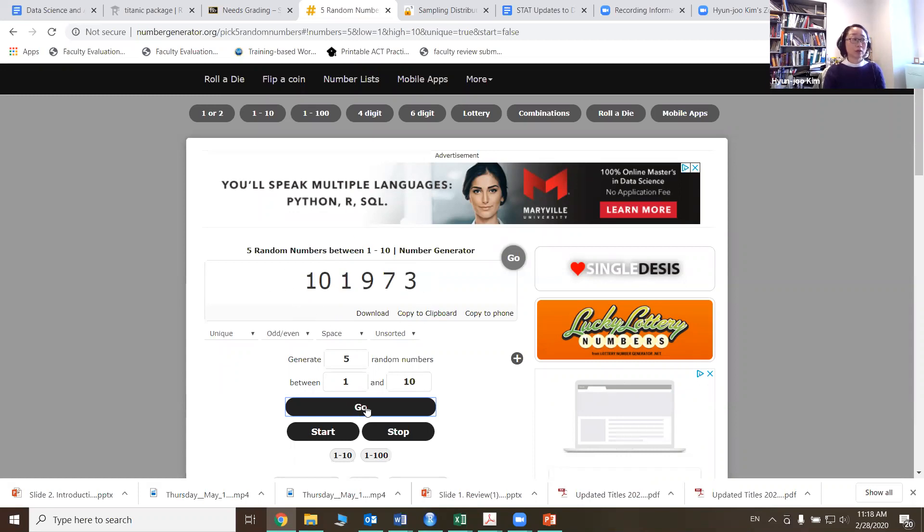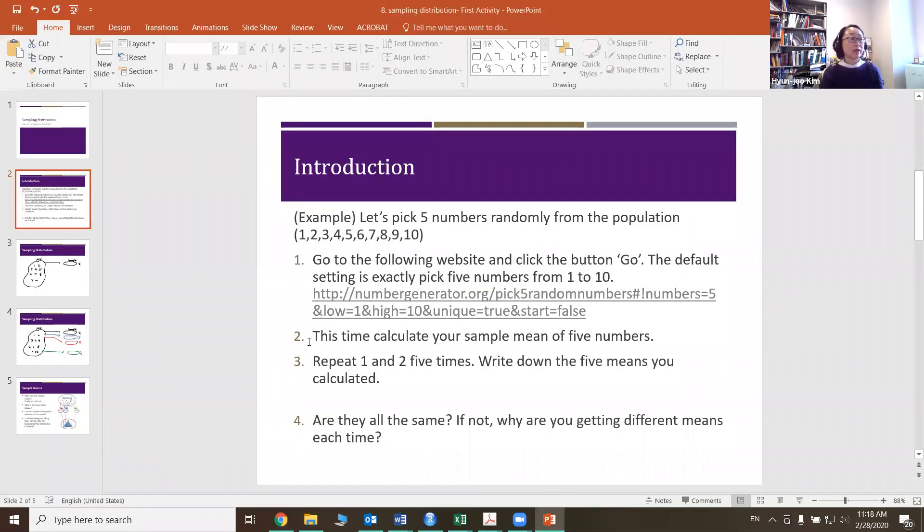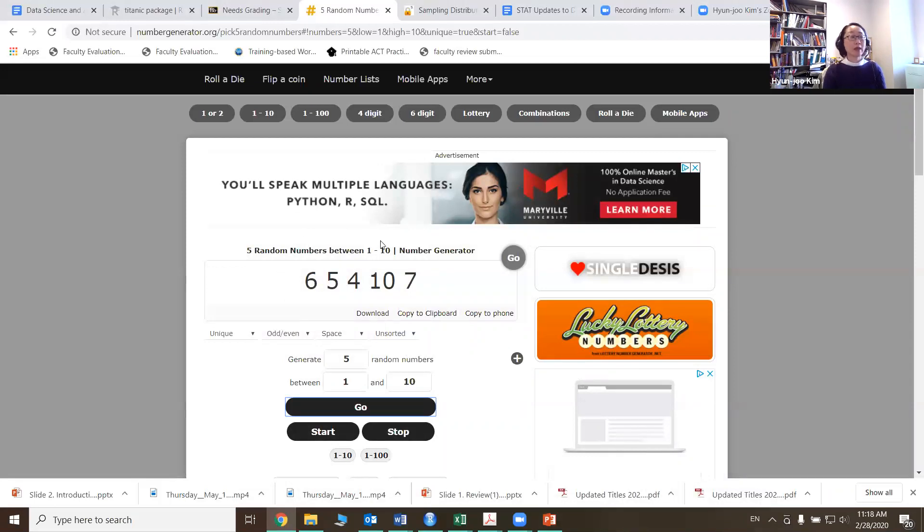If you push the Go button one more time, it'll do it again, and again, and so on. That's how we're going to do the random sample. And then with this random sample, this time I want you to calculate the sample mean of these five numbers. We learned how to do that in Chapter 3. You're going to just add all these five numbers and divide it by the size of the sample.